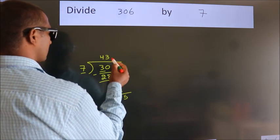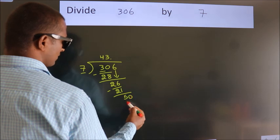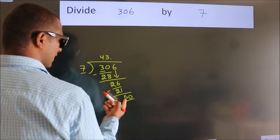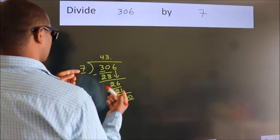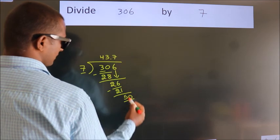So, what we do is, we put dot take 0. So, 50. A number close to 50 in 7 table is 7 sevens 49.